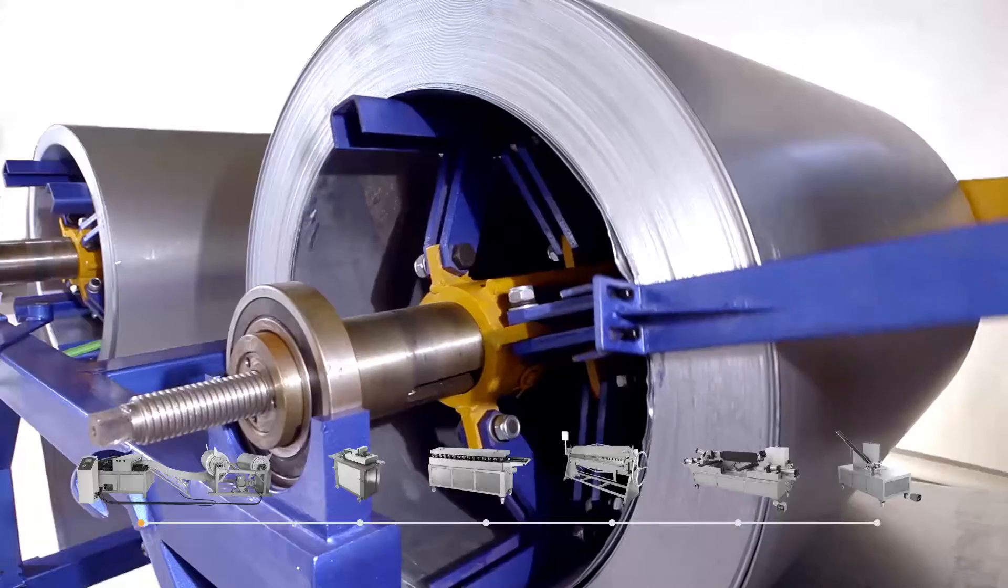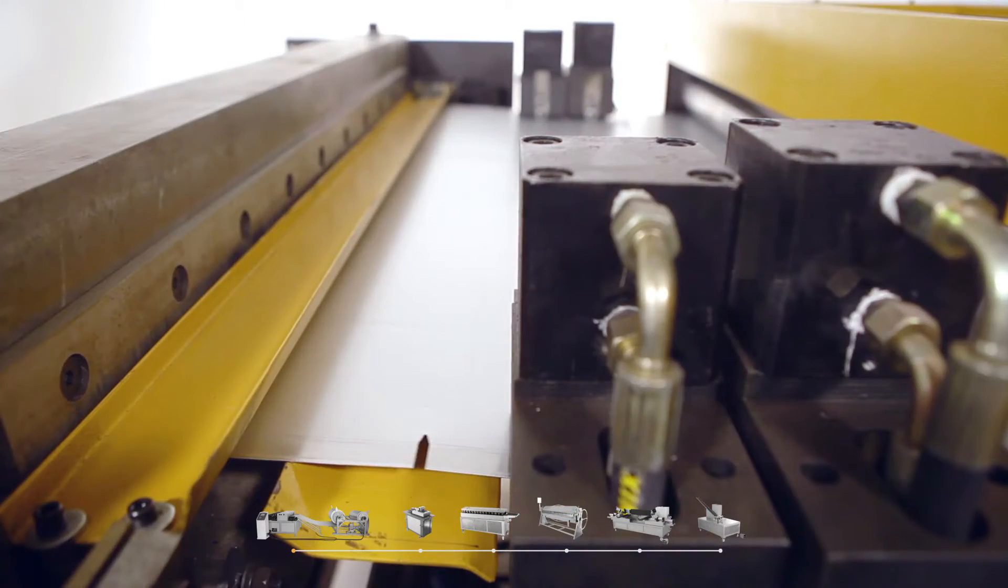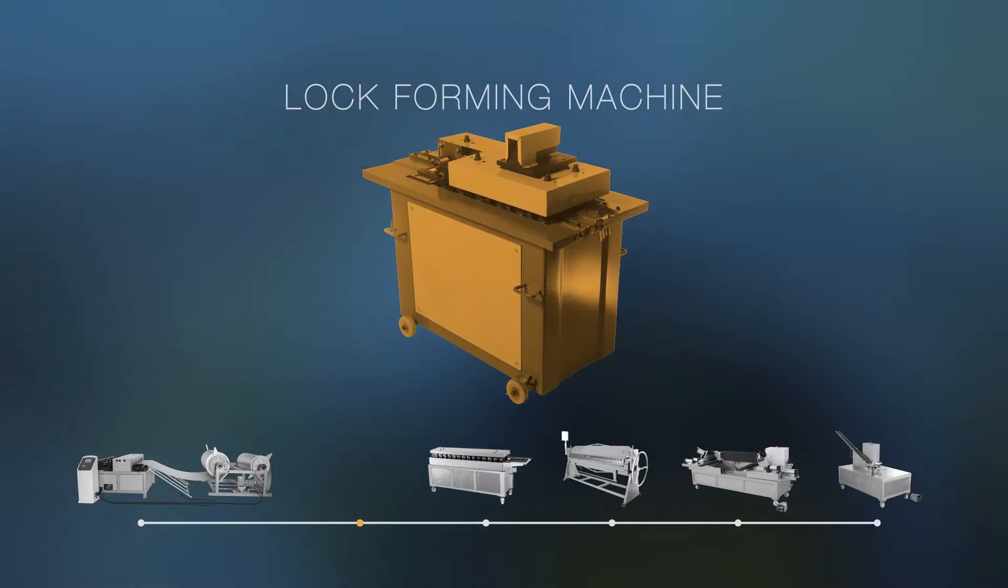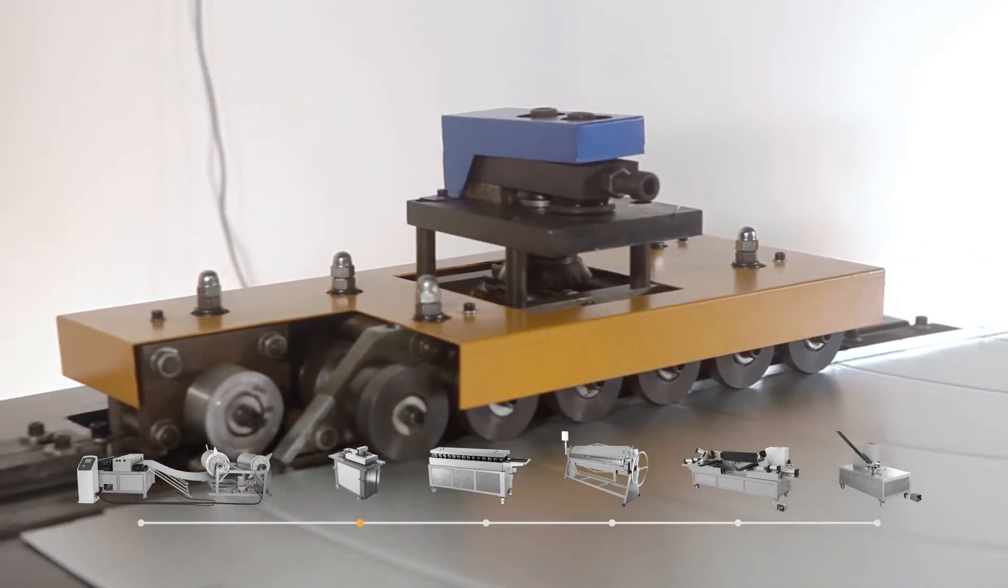Auto line 3: high-performance equipment responsible for the processes of uncoiling, leveling, and grooving and corner notching for TDC profile.